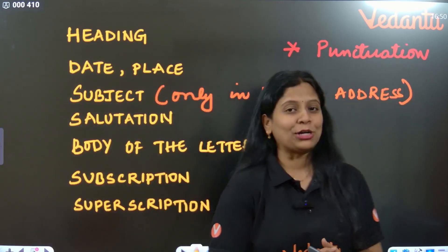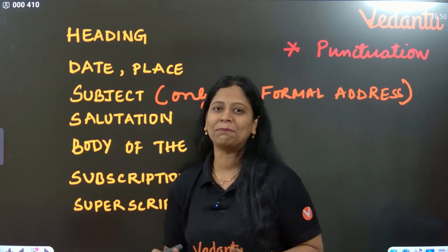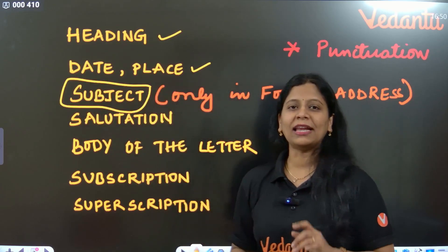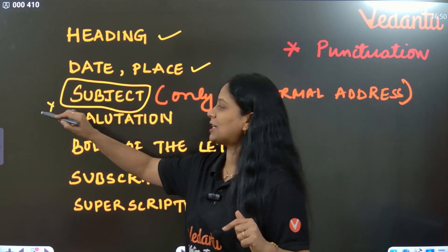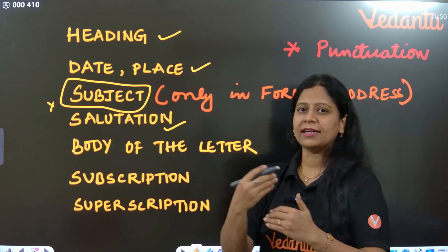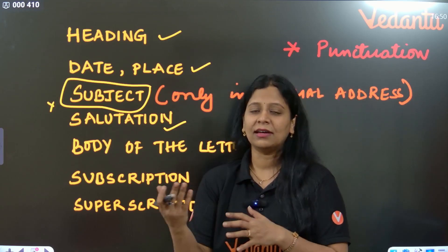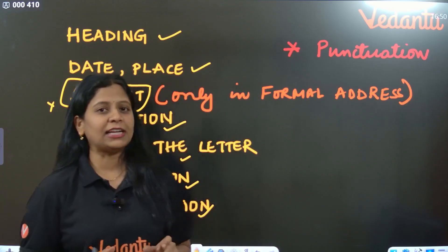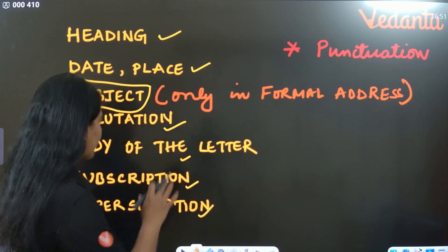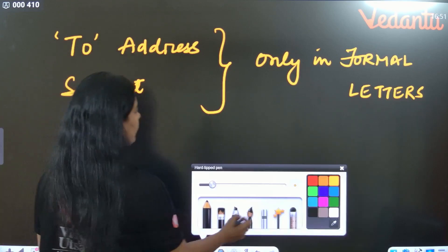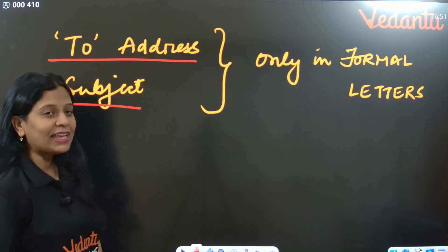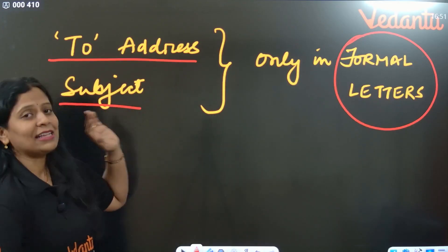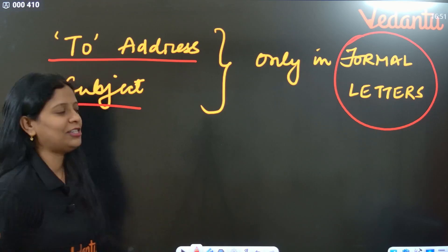Coming to different parts in a letter — what are the things you have to write? There is heading, date and place, then subject. Subject is only required in an official or formal letter; in an informal letter, subject is not necessary. Then salutation — like 'Dear Amma,' 'Dear Sister,' 'Sir,' or 'Respected Sir.' Then the body of the letter, subscription, and superscription. Subscription is the closing — 'Yours lovingly,' 'Yours sincerely.' To address and subject are extra things to be written only in formal letters.